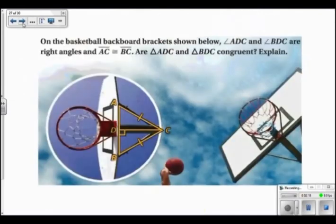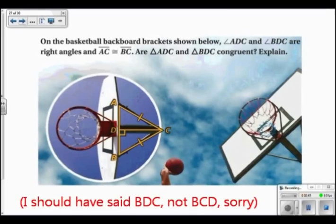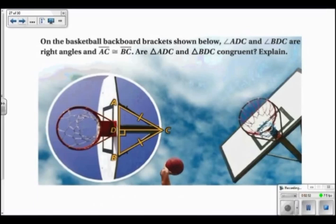Now let's use that theorem in one application problem and in a proof. On the basketball backboard brackets shown below, angles ADC and angle BCD are right angles, and that's drawn for us in the diagram. And segment AC is congruent to segment BC. The question we're being asked is, are triangle ADC and triangle BDC congruent?